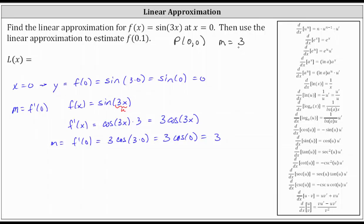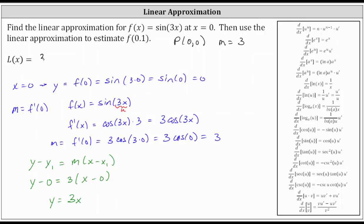Now that we have the slope of the tangent line and the point of tangency, we can determine the linear approximation for f of x at x equals zero. Let's use point-slope form of a line: y minus y one equals m times the quantity x minus x one, where x one comma y one is the point and m is the slope. This gives us y minus zero equals three times the quantity x minus zero, which simplifies to y equals three x. So if we call the linear approximation L of x, we now know L of x equals three x.